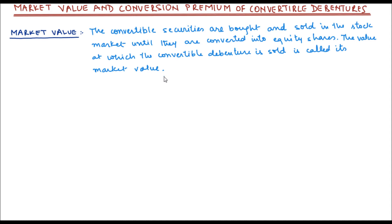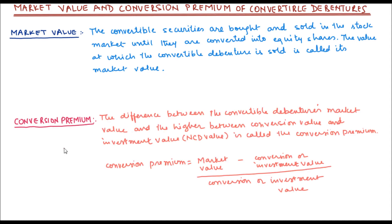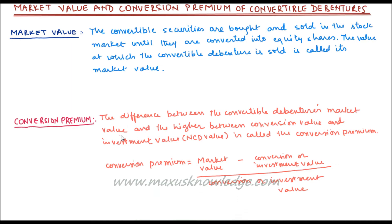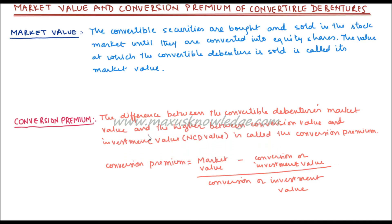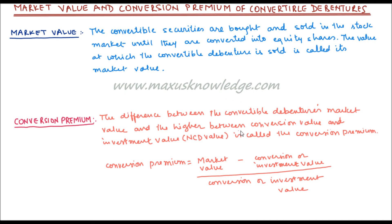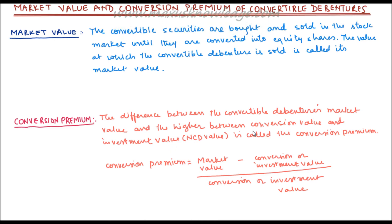Now let us look at the definition of conversion premium of a convertible debenture. Conversion premium is defined as the difference between the convertible debenture's market value — the value at which it is trading on the stock exchange — and the higher value between conversion value and investment value. Whichever of those two is higher, you deduct that from the convertible debenture's market value, and that gives you the conversion premium.